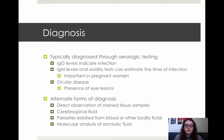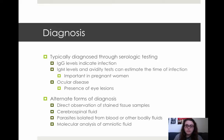Toxoplasmosis is typically diagnosed through serologic testing. They'll take a blood sample or a sample of another bodily fluid and test for IgG levels, which indicate an infection, and IgM levels and avidity tests can estimate the particular time of infection. This is particularly important for pregnant women, because whether or not they risk passing the pathogen to their child depends on whether they contracted the disease before or after they became pregnant. Ocular disease can also be diagnosed through the presence of eye lesions, but they typically will run serological testing as well to confirm that diagnosis.